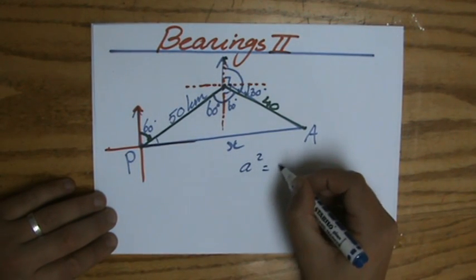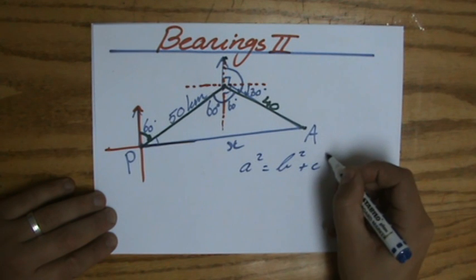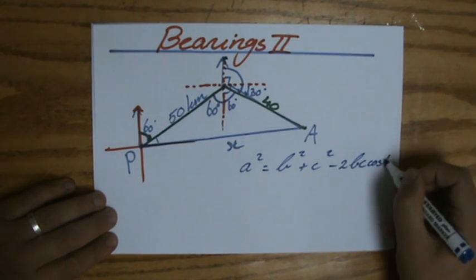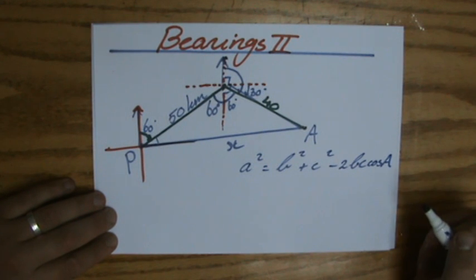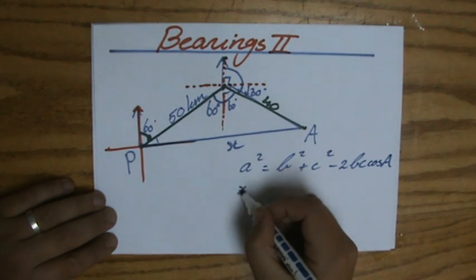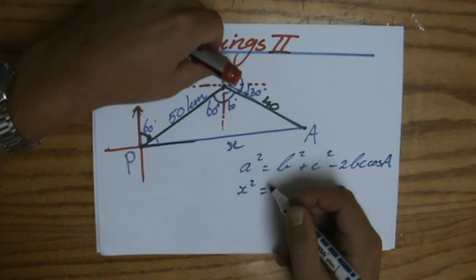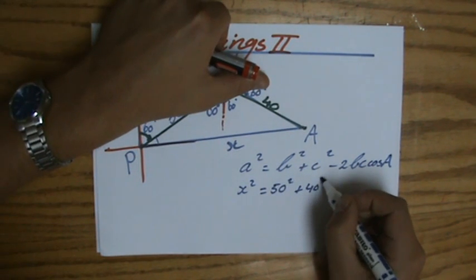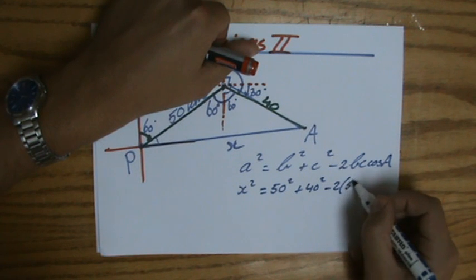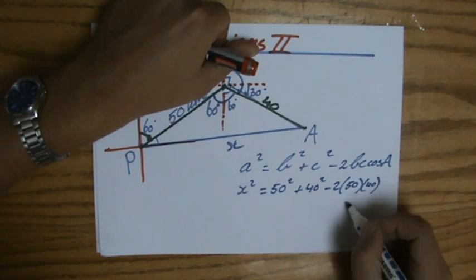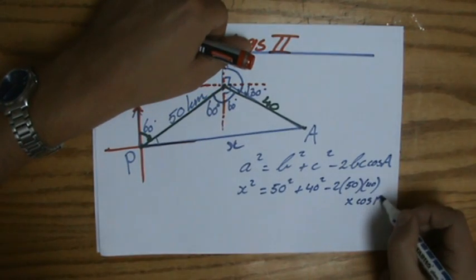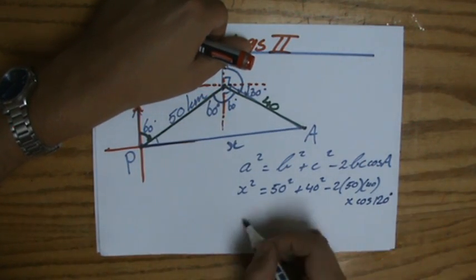A squared equals b squared plus c squared minus 2bc, the cosine of A. So x squared equals b squared plus c squared minus 2bc times the cosine of 120 degrees.